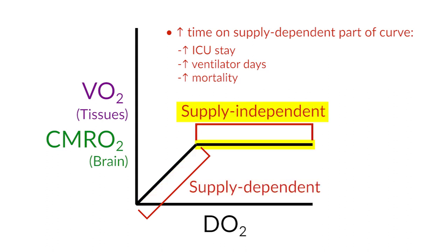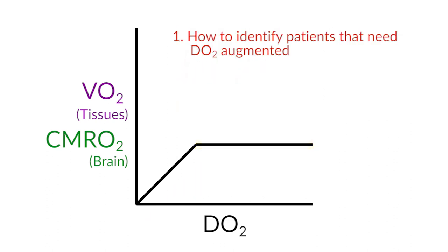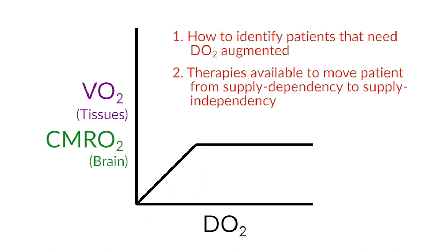Today's discussion will be about, number one, how we identify those patients, and number two, the therapies that we can institute to move them from supply-dependency to being supply-independent, and thereby improve their outcome in the pediatric intensive care unit.